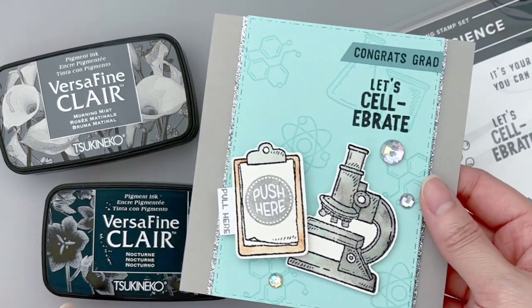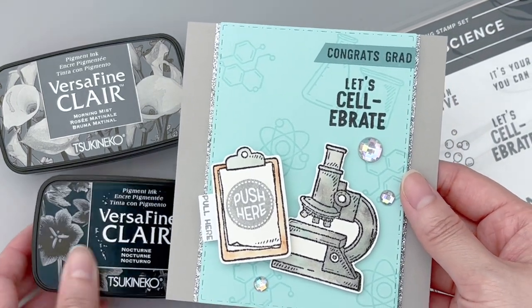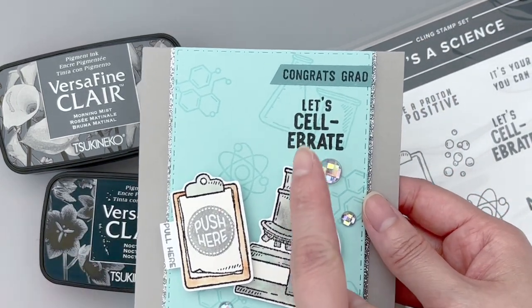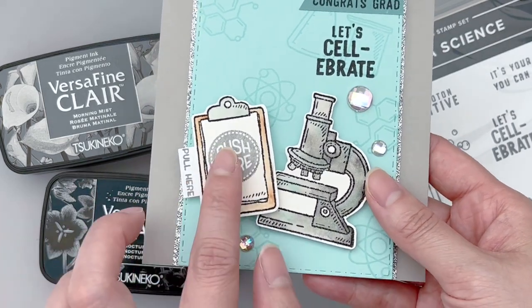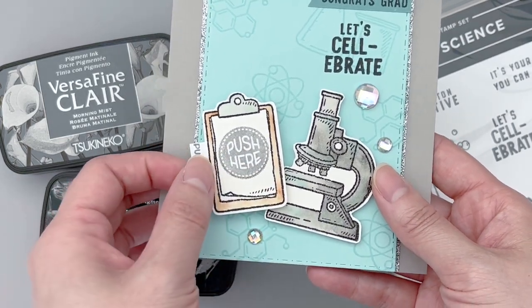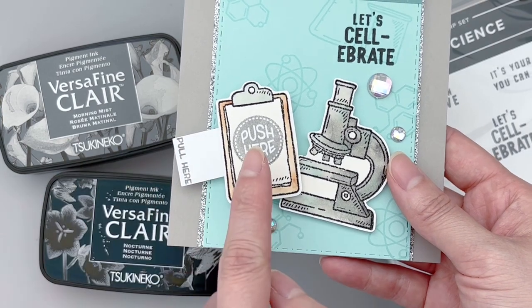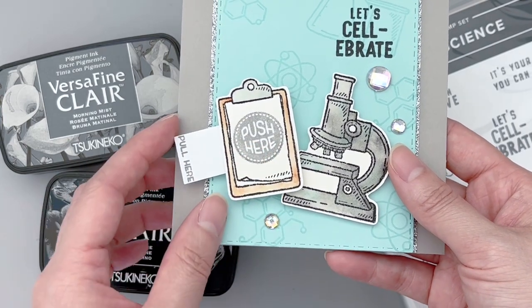I did stamp some additional details using Lawn Fawn's Push Here stamp set. It has some really unique stamps that pair well with interactive cards. I used Push Here and Pull Here as some additional cues for someone who is new to light up cards.